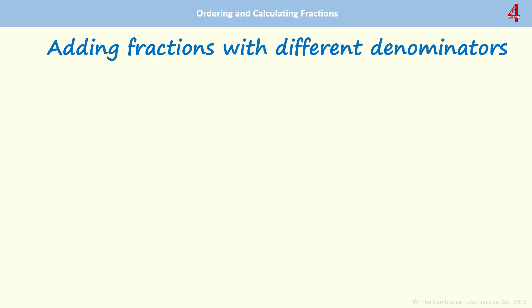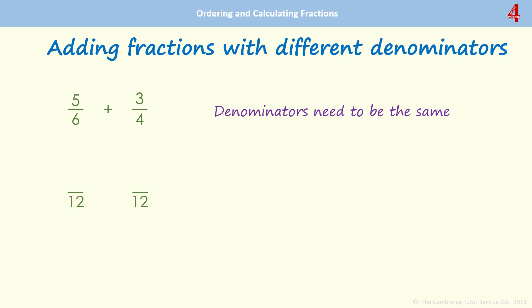Adding and subtracting fractions that have different denominators. Start with a couple of straightforward ones. 5 sixths add 3 quarters. First thing we need to do is make the denominators the same. 6 and 4 don't share factors other than 1, so the lowest common multiple of 6 and 4 is 12, and that becomes our denominator.